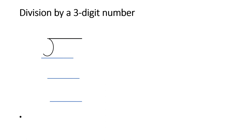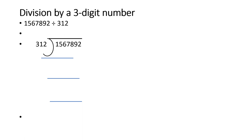Now division by a three-digit number. Here is the question: 15,67,892 divided by 312. We write this in long division form. Again, either make the table of 312 in a rough column or use estimation. I am going with estimation.